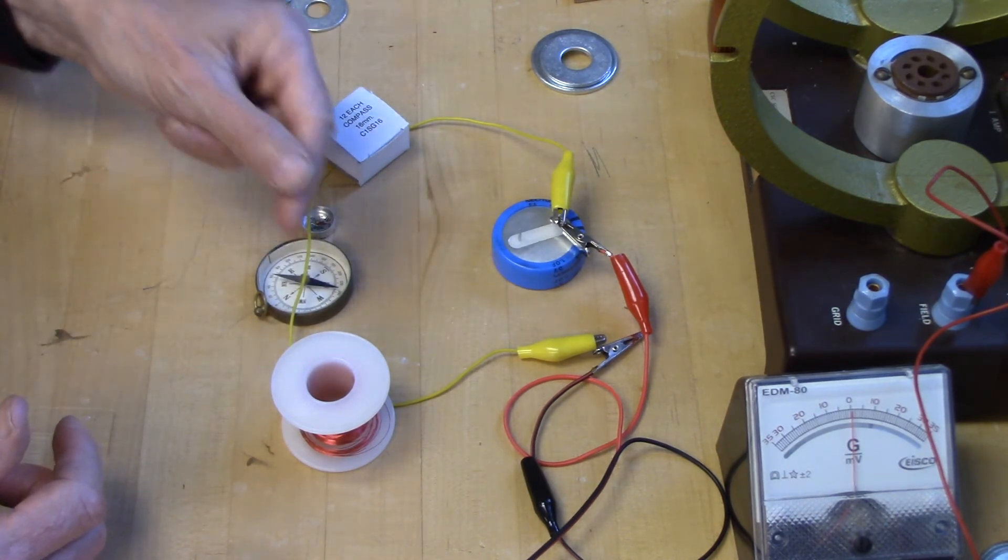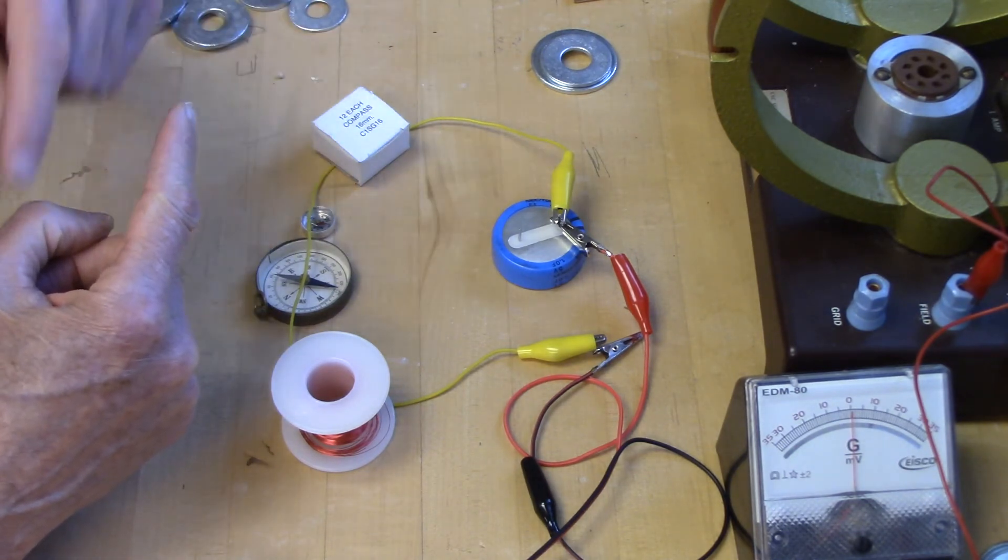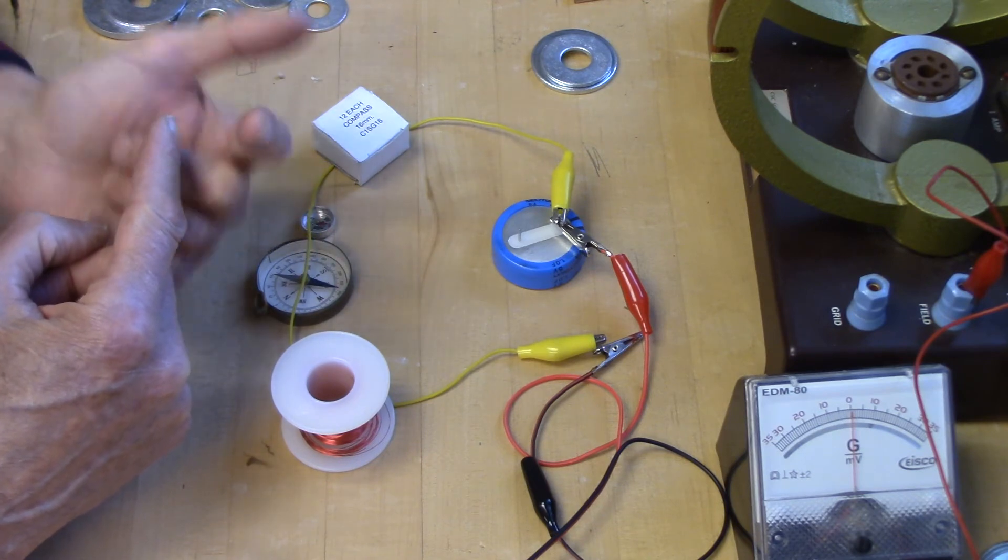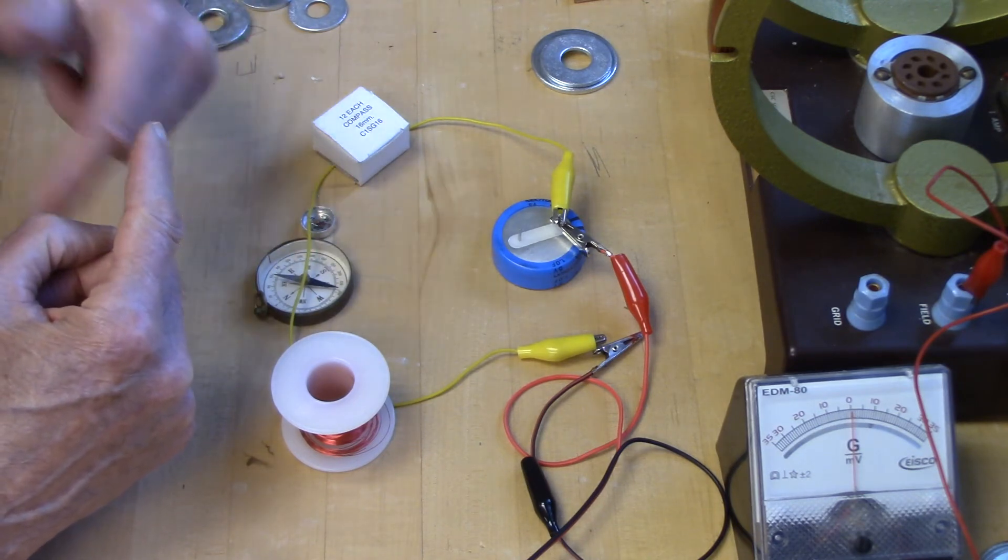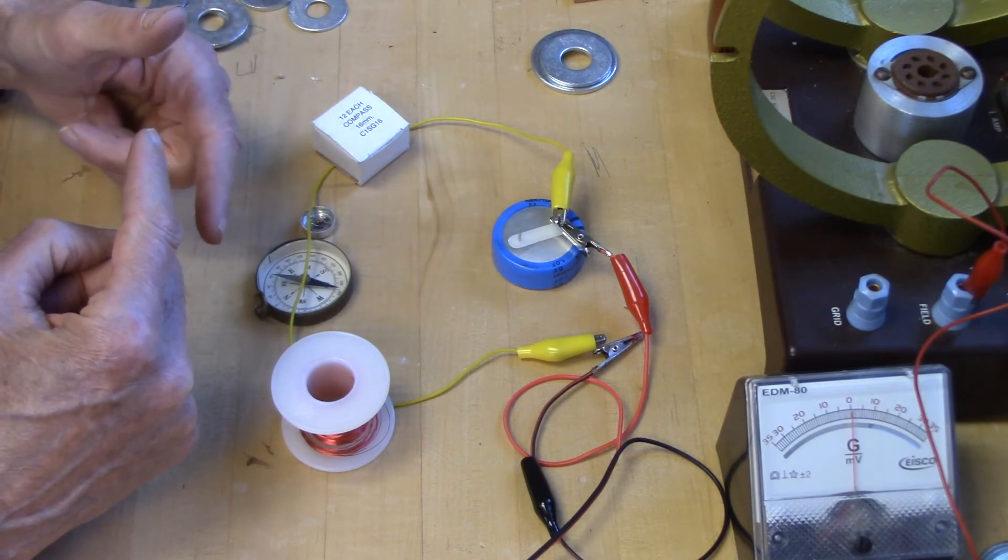And that magnetic field, it turns out, surrounds the wire. If this is the wire, the magnetic field surrounds the wire in the sense that the magnetic field is always tangent to the circle that surrounds the wire through a given point.